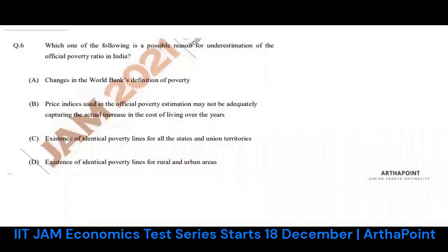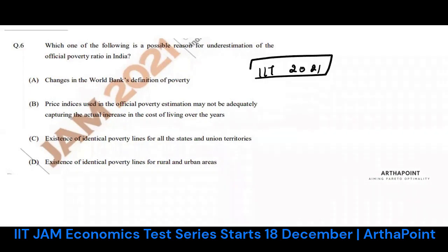This is a question from IIT JAM Economics 2021. It is a question from Indian Economics: which of the following is a possible reason for underestimation of the official poverty ratio in India?